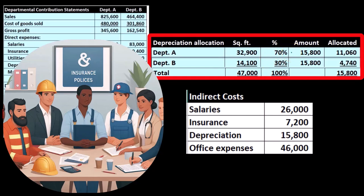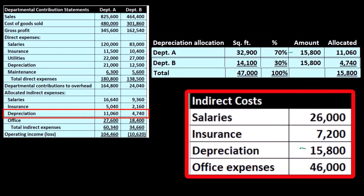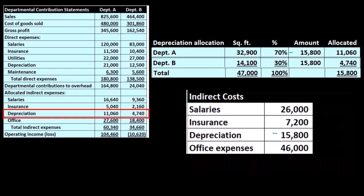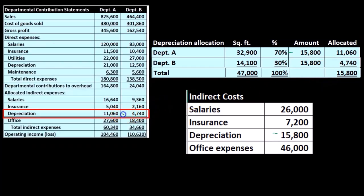We know what the total depreciation is but didn't know how to break it out. We're going to break it out 70/30 because we're basing it on square footage. So we take 70% times $15,800 to get $11,060, and 30% times $15,800 to get $4,740, for a total of $15,800. That's our breakout for depreciation.